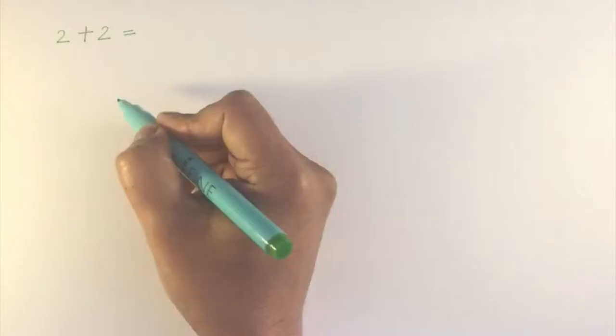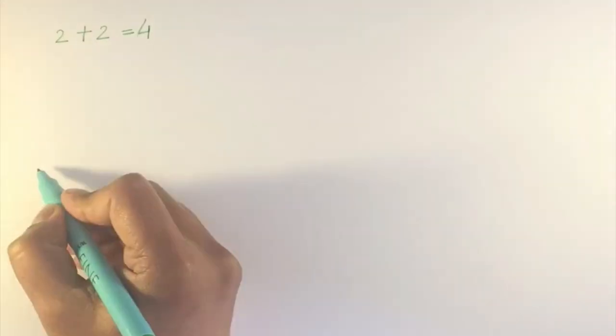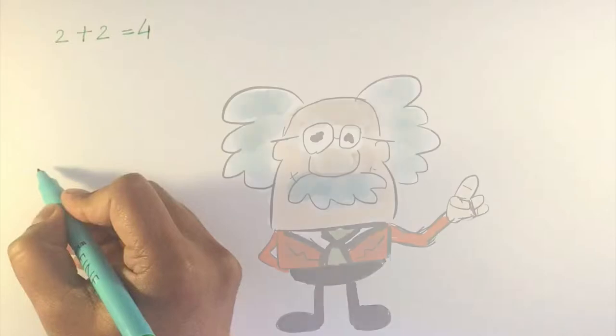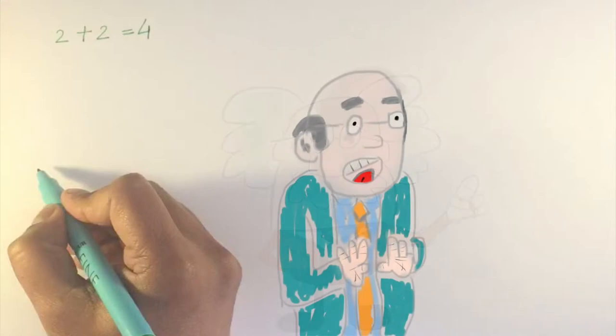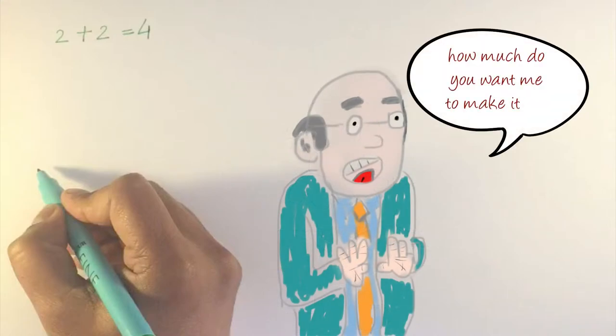If we asked you how much is 2 plus 2, quite effortlessly you would say 4. Although physicists might say mostly 4, an economist would shut the door, close the windows, and in a hushed whisper ask, how much do you want me to make it?